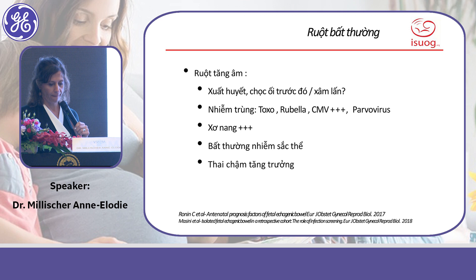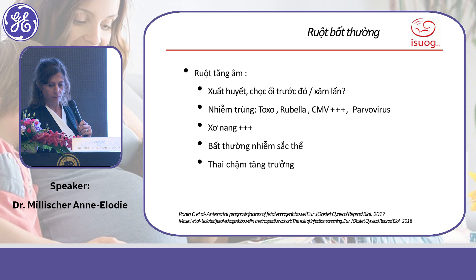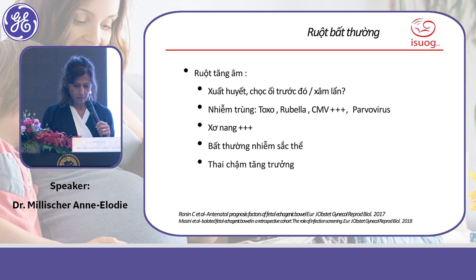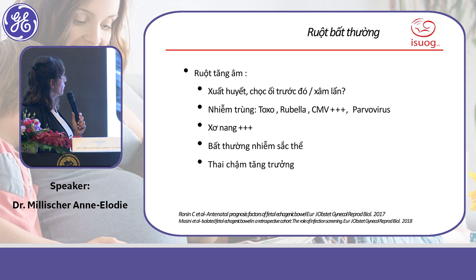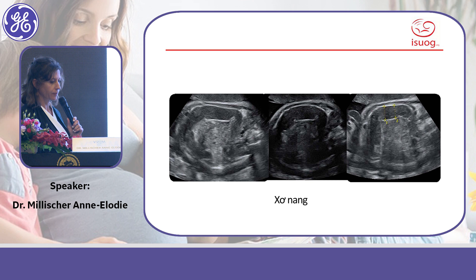When you encounter a case of hyperechoic bowel, pay attention to the following causes: first, hemorrhage or bleeding; then infections, especially fetal CMV infection. Cystic fibrosis is also very commonly associated with hyperechoic bowel, as are chromosomal anomalies and intrauterine growth restriction. Here is an example of cystic fibrosis with dilated bowel and hyperechoic appearance.